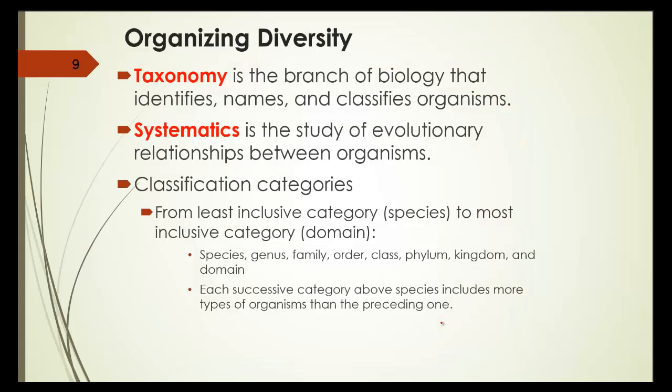Taxonomy is the branch of biology that identifies names and classifies organisms. Systematics is the study of evolutionary relationships between the organisms.